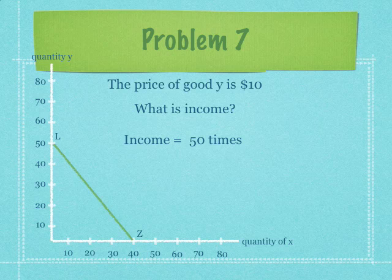So income equals 50 times $10, and that 50 again is from the graph there. So income equals 10 times 50, and that 10 is from there. So income equals $500.